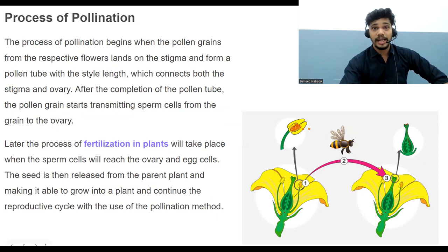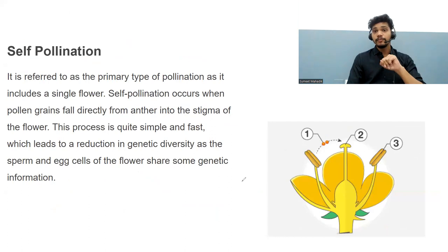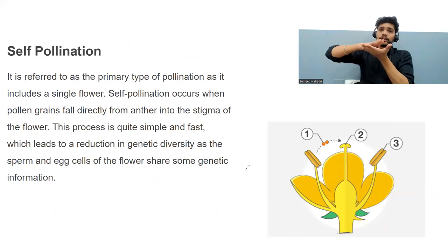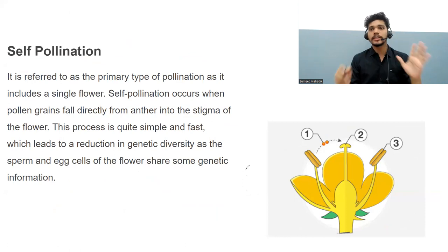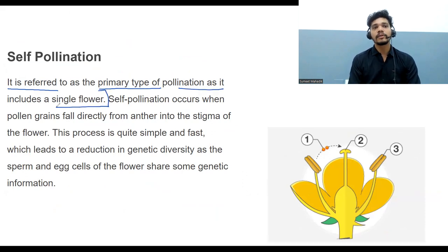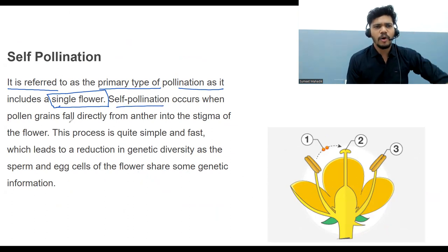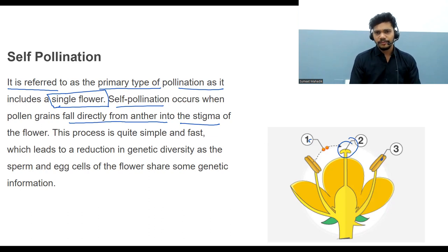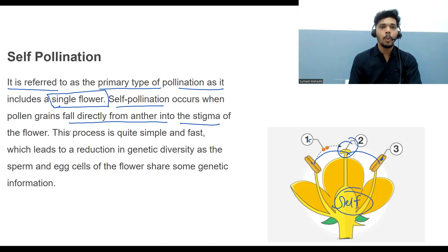Self-pollination means the same flower's pollen grains from the anthers get deposited on the same flower's stigma. It is referred to as a primary type of pollination as it includes a single flower. Self-pollination occurs when pollen grains fall directly from the anther to the stigma — a direct transfer within the same flower.